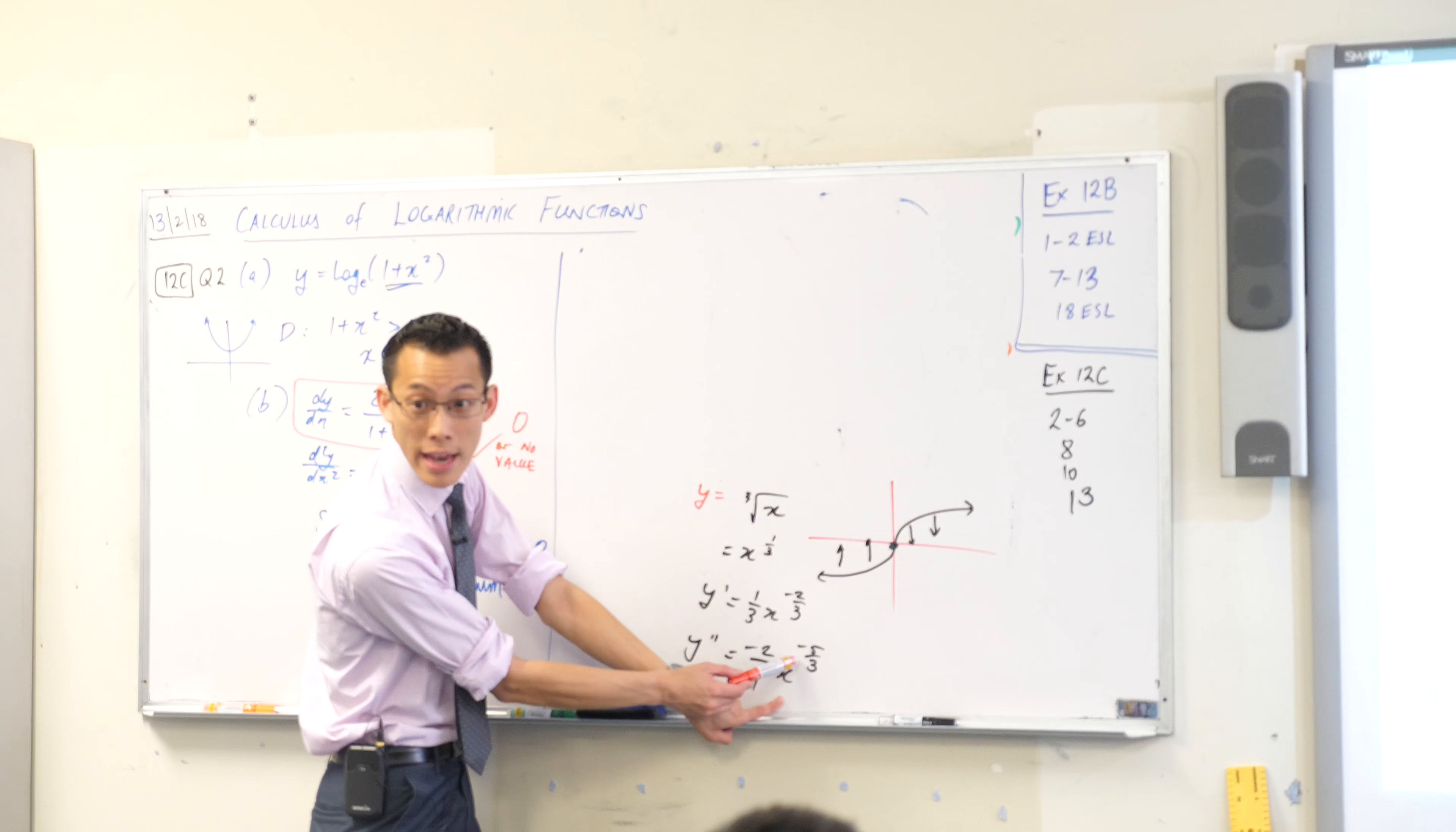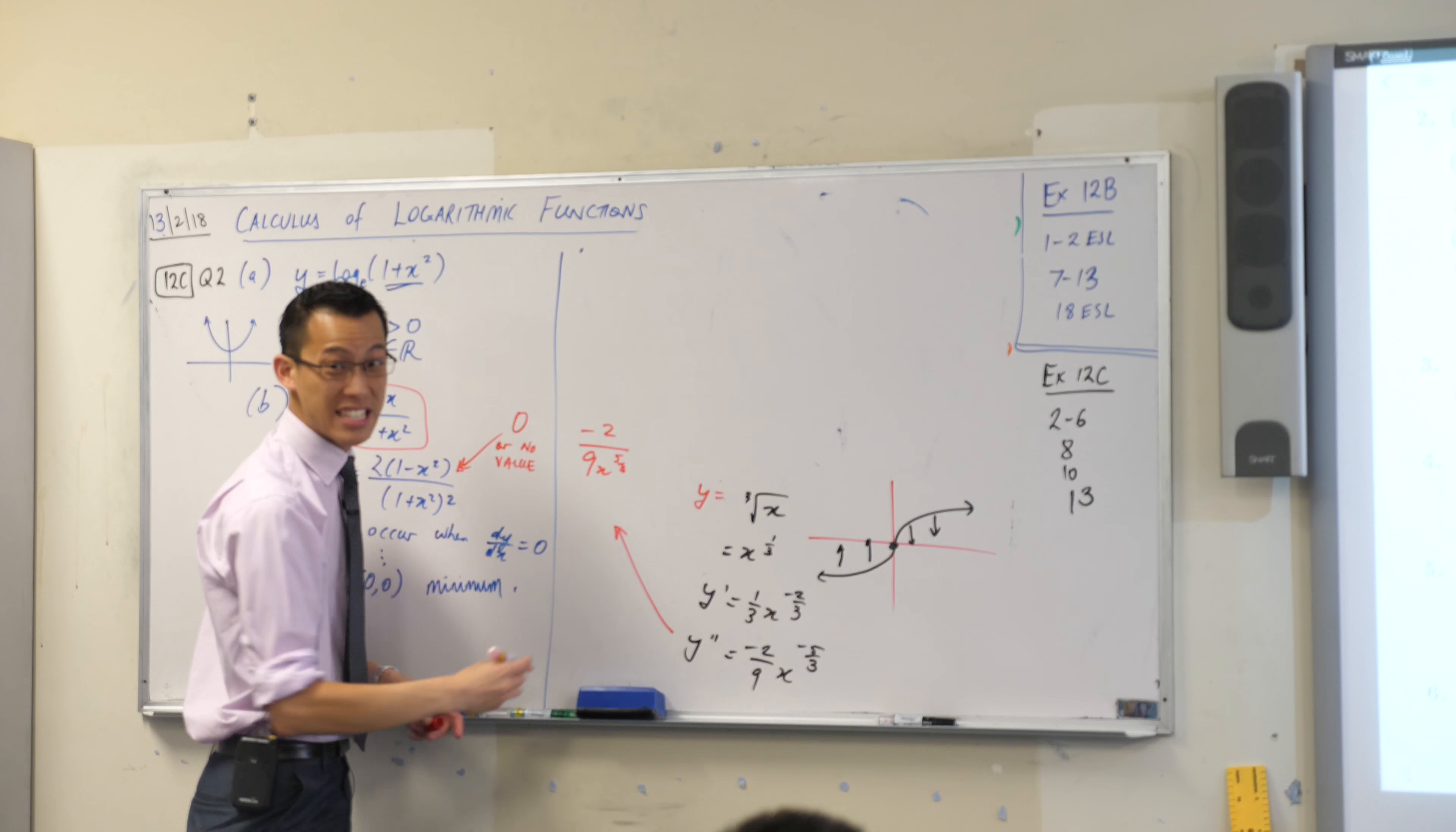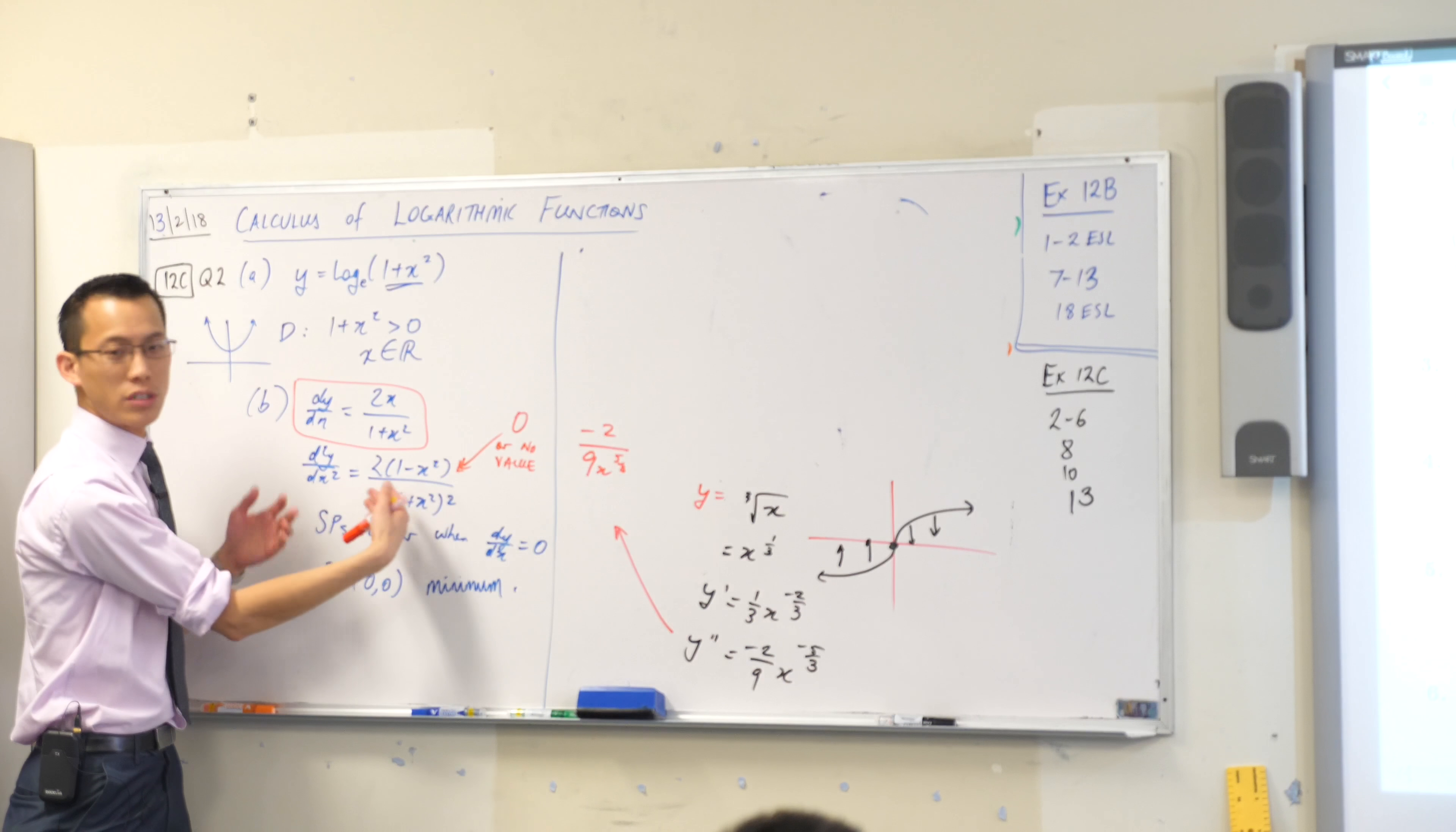See that minus sign on that index? That means that the way you could write this is minus two over nine x to the five thirds. There's an x on the bottom. You put zero into that and it just explodes in your face. But there's a point of inflection. So we're looking for zeros or discontinuities.